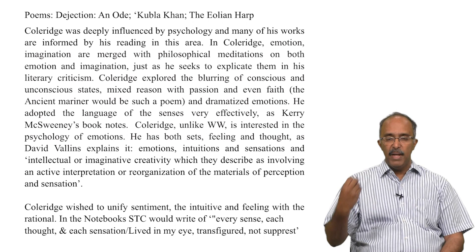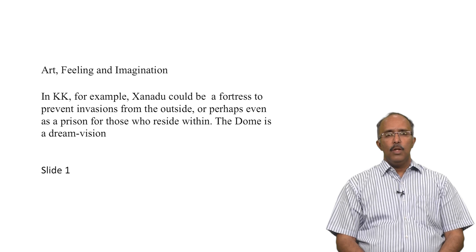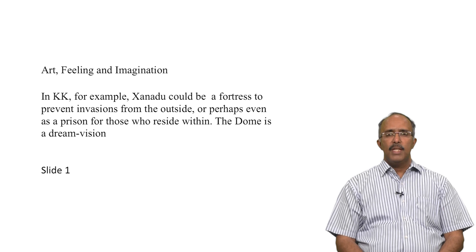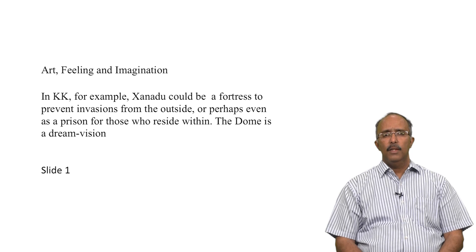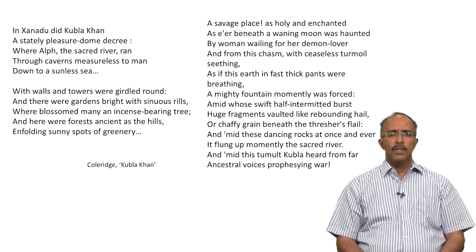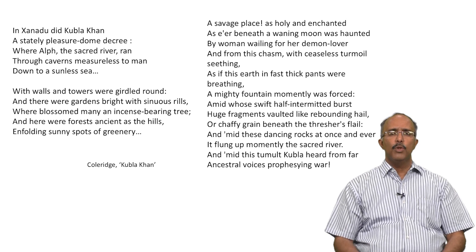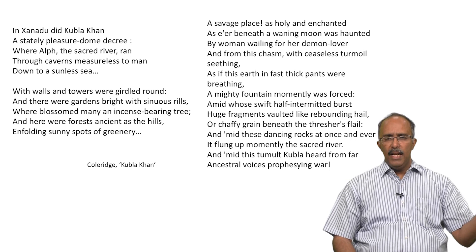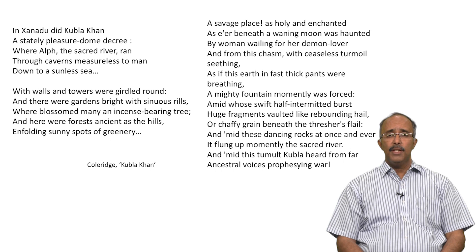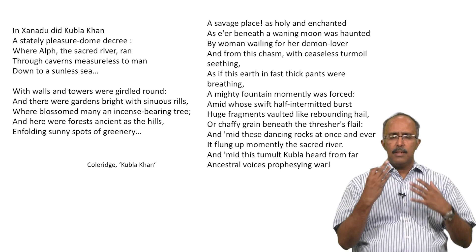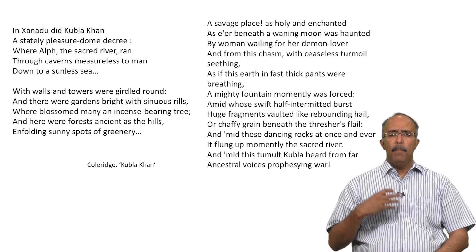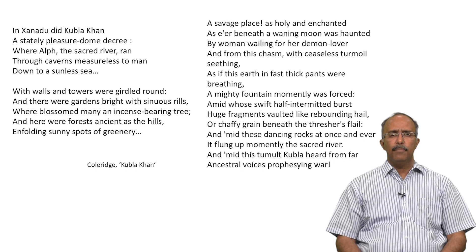Our first theme in our study of Coleridge is Art, Feeling, and Imagination. In Kubla Khan, one of Coleridge's most famous poems, Xanadu could be a fortress to prevent invasions from the outside, or perhaps a prison inside. The dome is a dream vision. The poem opens with the famous 'In Xanadu did Kubla Khan, a stately pleasure dome decree,' with a description of the walls, the garden, and later a savage place described as holy and enchanted. There is a description of the river thrashing and panting, with very strong verbs — the mountain, the fountain momentarily forced and burst.